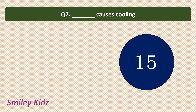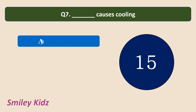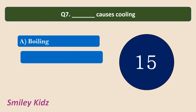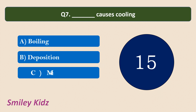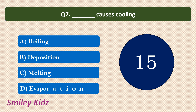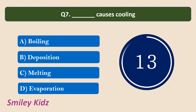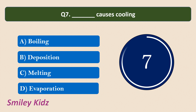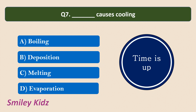Moving to question number 7: What causes cooling? Options are: Boiling, Deposition, Melting, Evaporation. Your time starts now. Your time is up. The correct answer is Evaporation. Evaporation causes cooling.